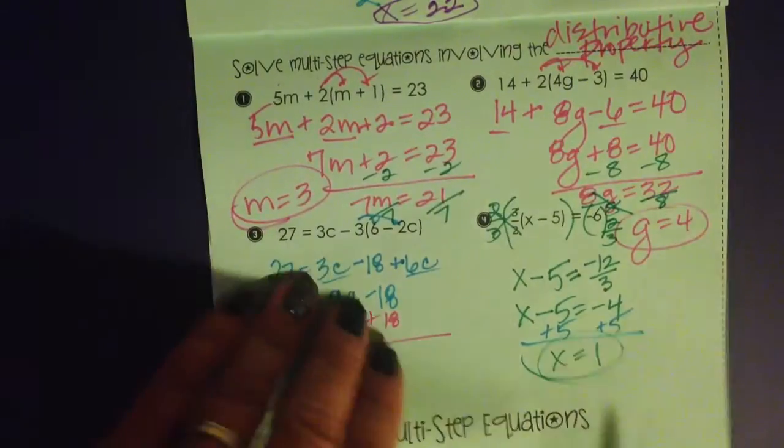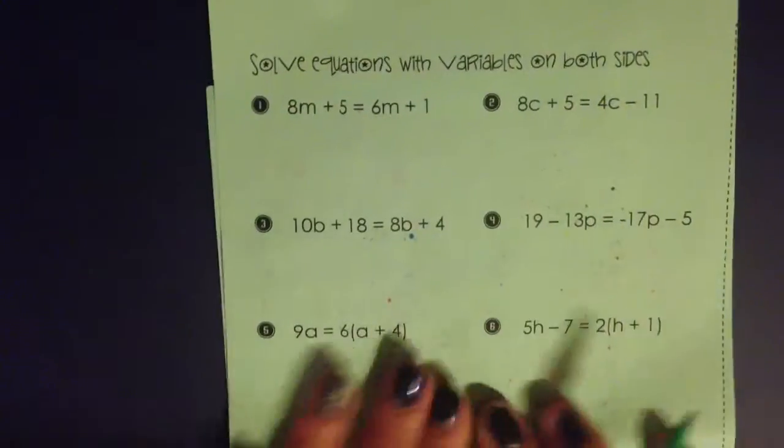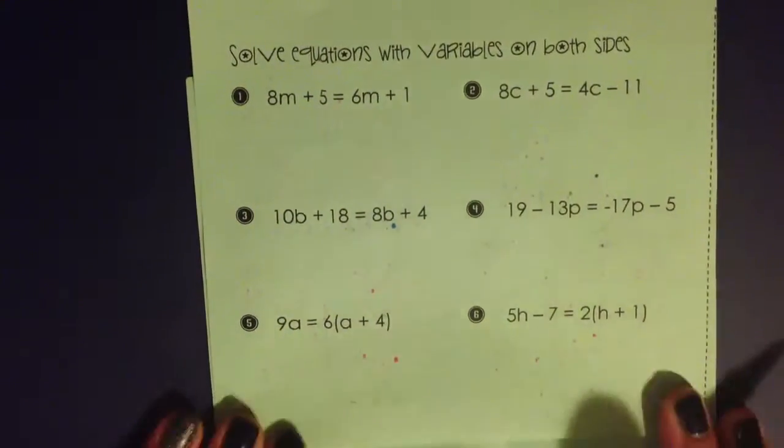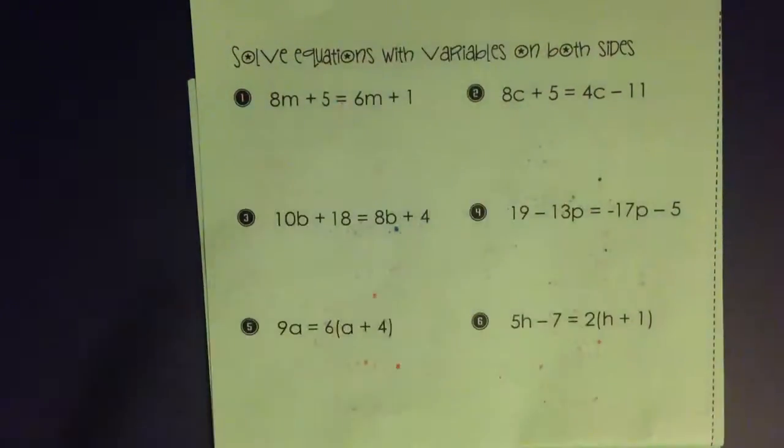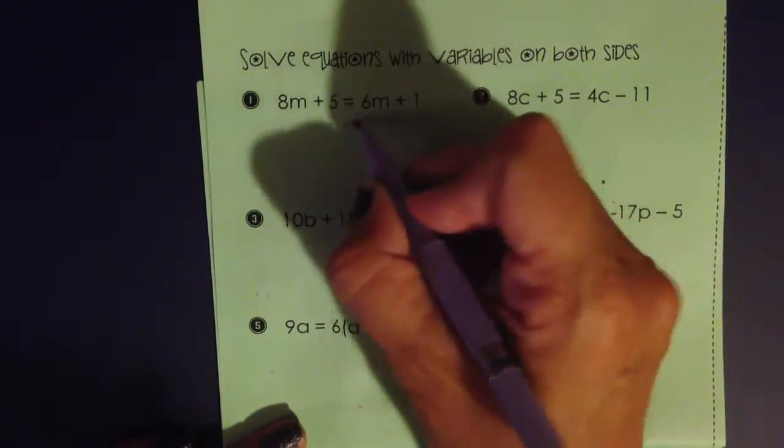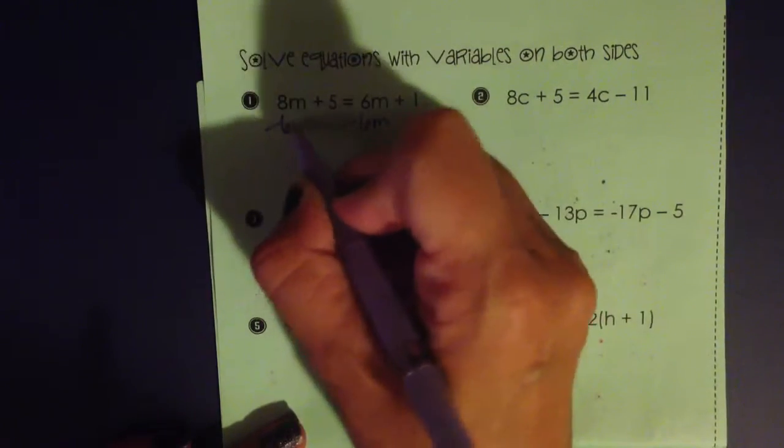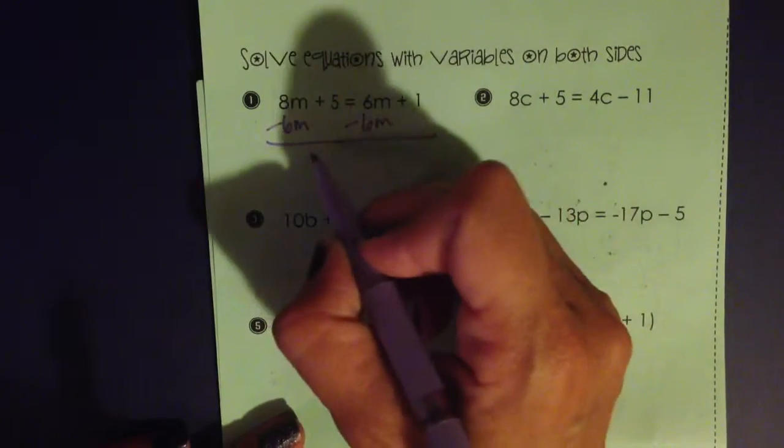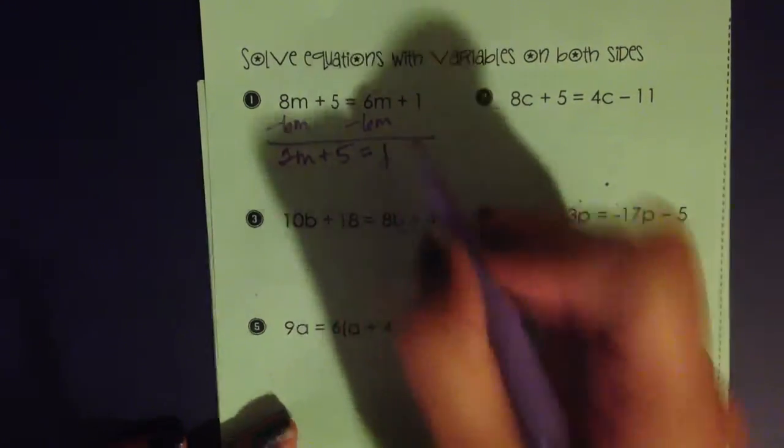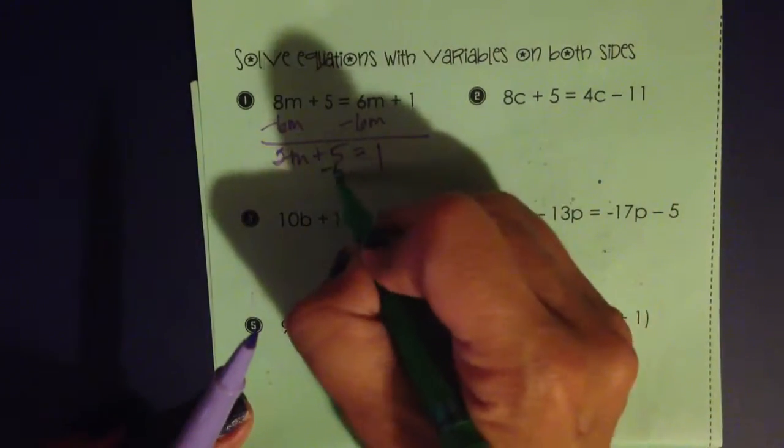Now, moving on to equations with variables on both sides. We're going to have to think about how we want to undo. Now, every one of these problems has multiple ways you can go at solving them. I choose the ways I do to try to avoid using negative coefficients on the variables. I'm going to take away 6m. I want all the m's together on the left. 2m plus 5 equals, I have one left, minus 5.